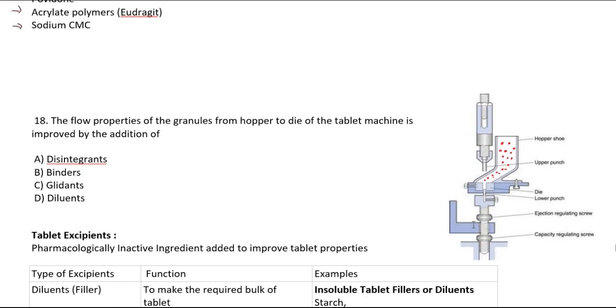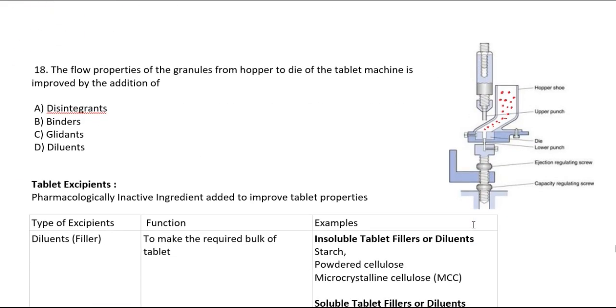The flow property of granules from hopper to die of tablet machine is improved by the addition of disintegrants, binders, glidants, or diluents. The answer is glidants.